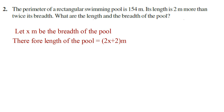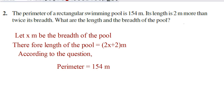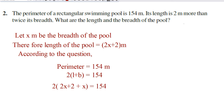The perimeter of the rectangular swimming pool is 154 meters. According to the question, perimeter is equal to 154 meters. Perimeter of a rectangle is 2 into (l plus b). So we can write 2 into (l plus b) is equal to 154. Now substitute the values: length is 2x plus 2 and breadth is x. So we write 2 into (2x plus 2 plus x) is equal to 154.